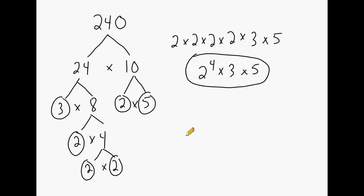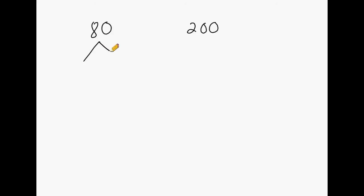Next, we're going to demonstrate how we can take any two numbers, make prime factorizations of both of those numbers, and use the results to find the greatest common factor as well as the least common multiple. So let's say we want to find the GCF and the LCM of the two numbers 80 and 200. The first thing you would do is complete a factor tree for each one of the numbers, so let's start with 80.